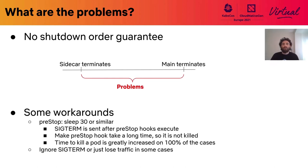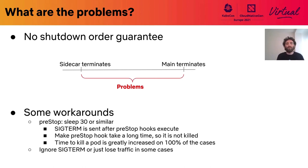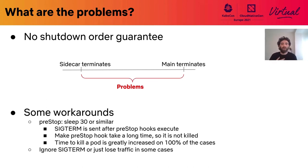Something similar happens on shutdown. There are no order guarantees on shutdown either, so the sidecar can terminate before the main application, and this is a big problem for several scenarios. If the service mesh is killed before your main container, you won't be able to gracefully finish in-flight connections because you can't use the network. Workarounds like doing a sleep to delay being killed, ignoring the SIGTERM, or just losing some traffic all have big downsides.